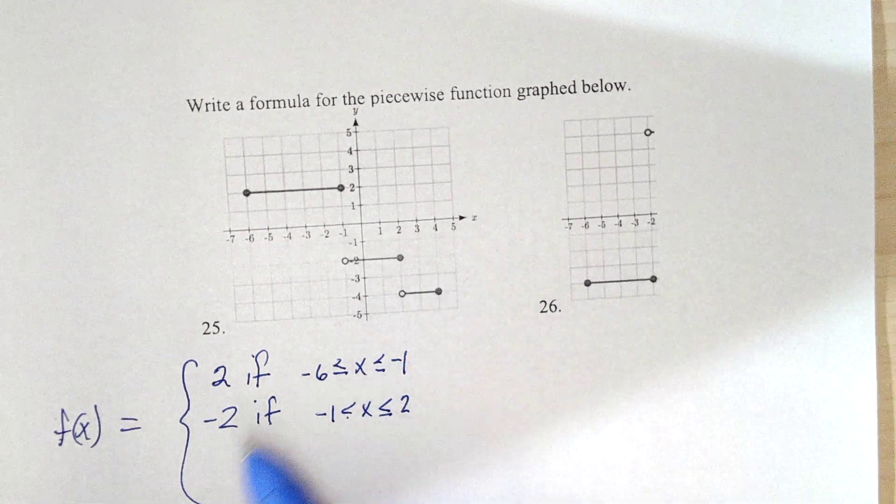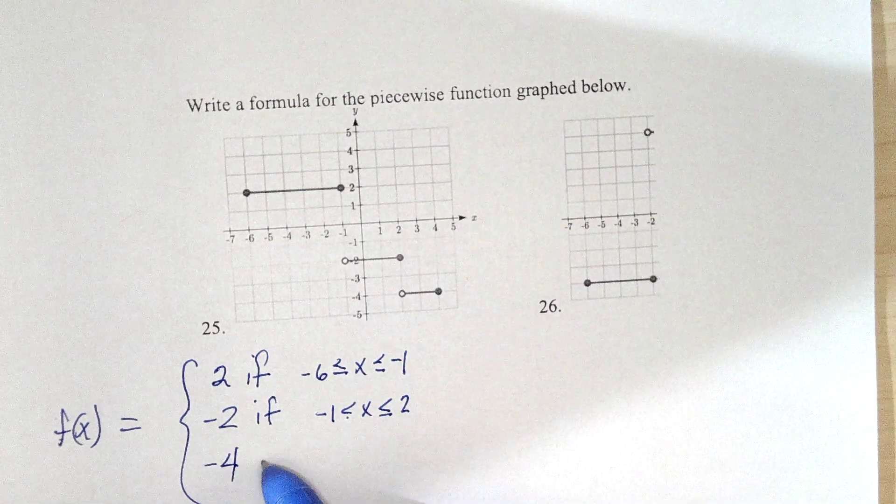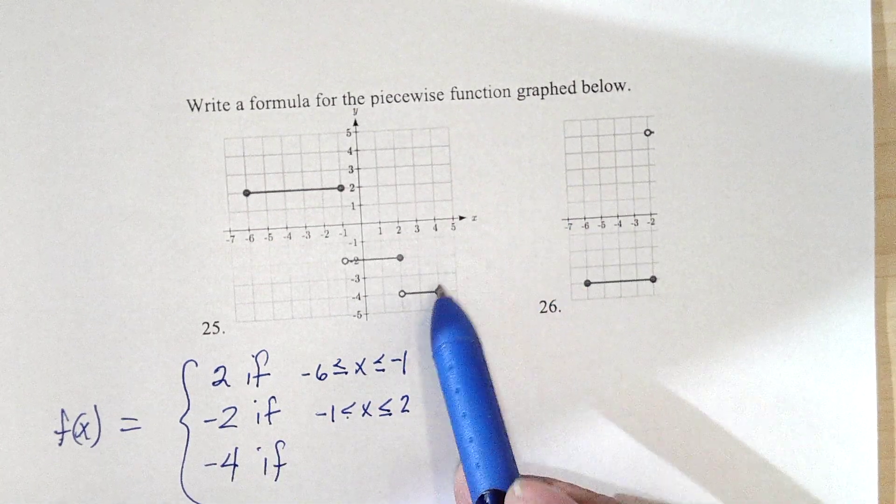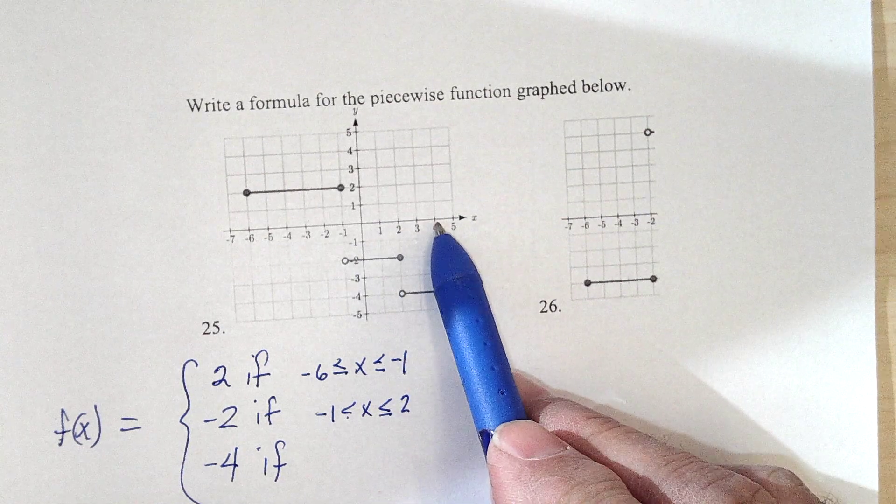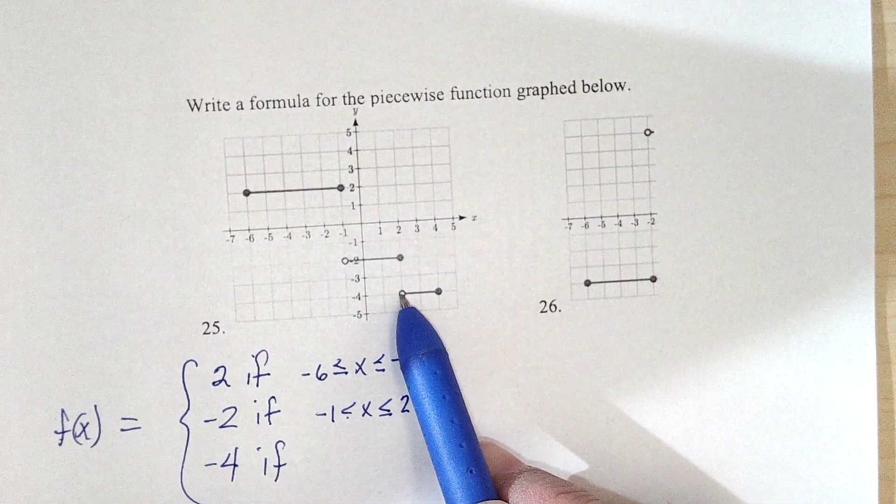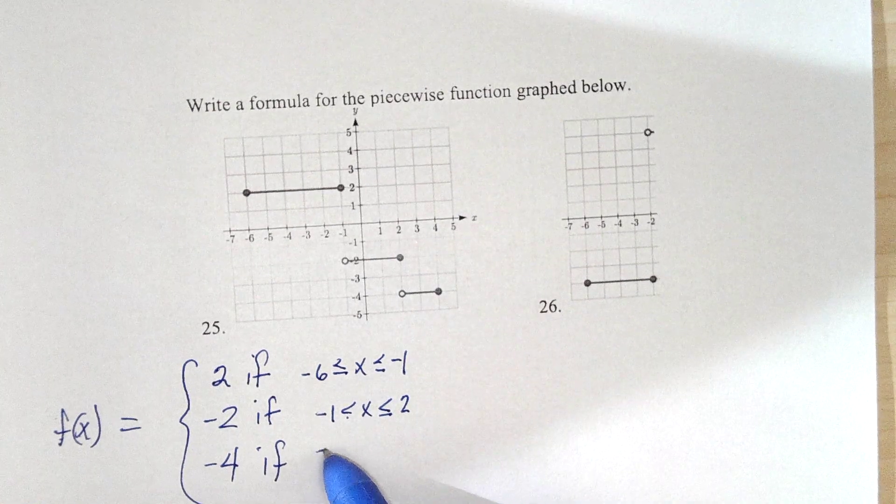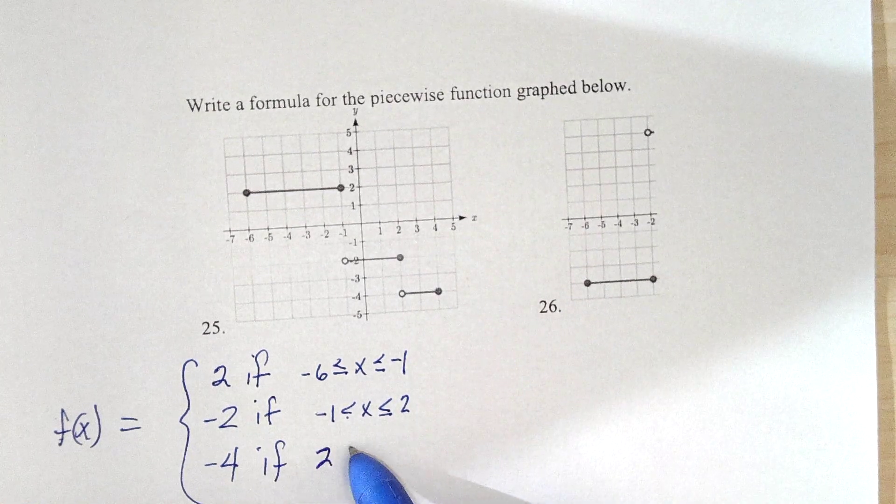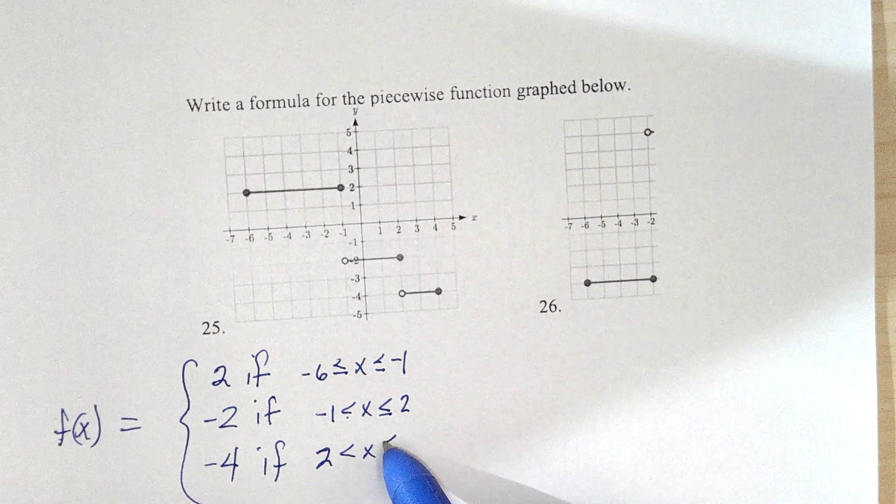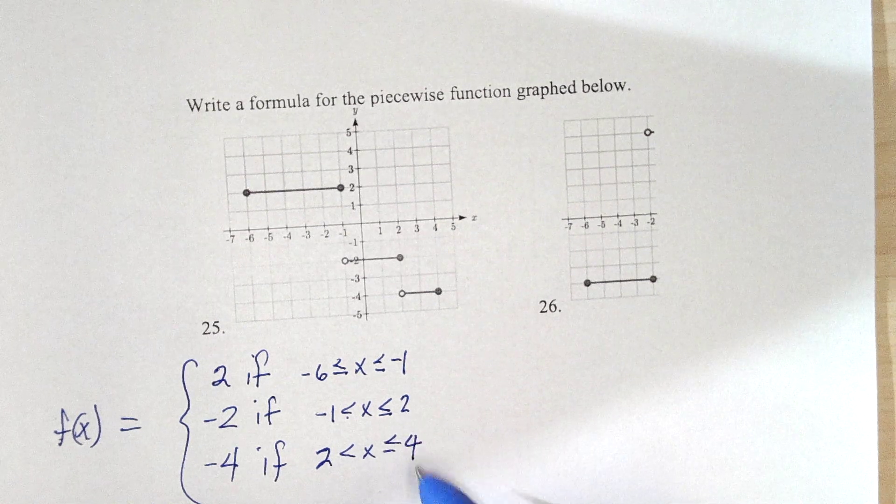And the y height here is negative 4 if we're in the window from 2 to 4, not including the 2 but including the 4. 2 up to 4, including 4.